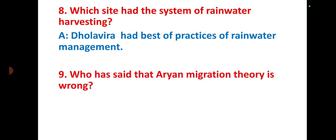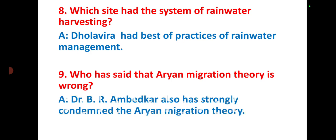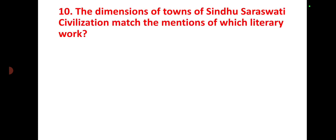Question number nine: who has said that the Aryan migration theory is wrong? Dr. B.R. Ambedkar has strongly argued against the Aryan migration theory.